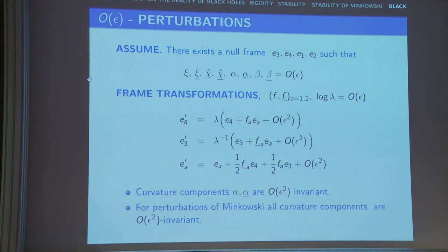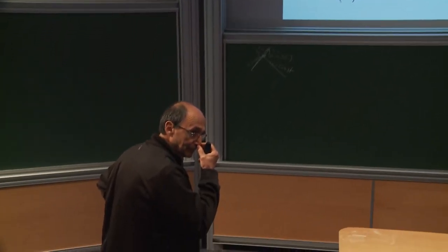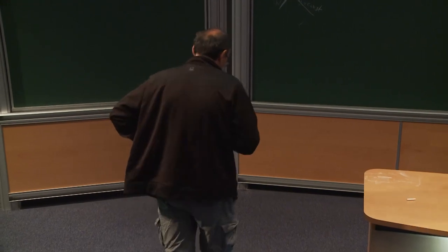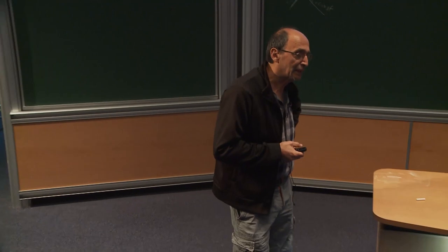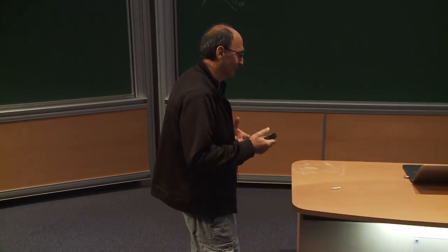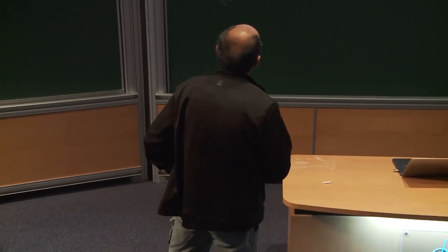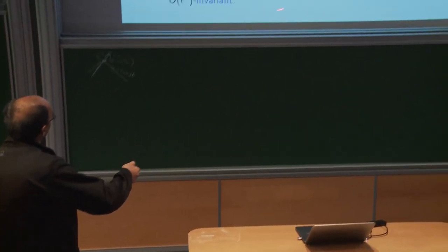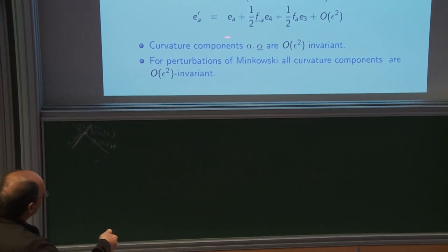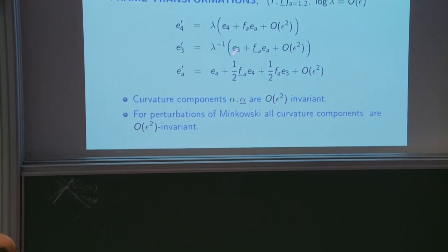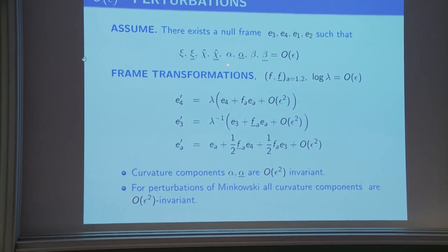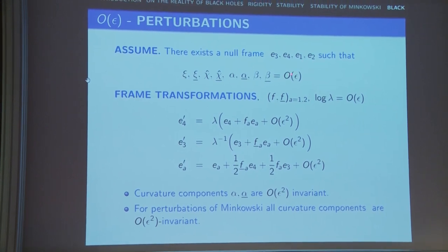For perturbations of Minkowski space, all curvature components are O(epsilon-squared) invariant — this is one major simplification of the stability of Minkowski space. In perturbations of Minkowski space, rho and rho-star are also O(epsilon), and if you do these transformations, all components are O(epsilon-squared) invariant. The construction is done at once — for nonlinear equations, everything has to be done simultaneously, including constructing a full coordinate system.